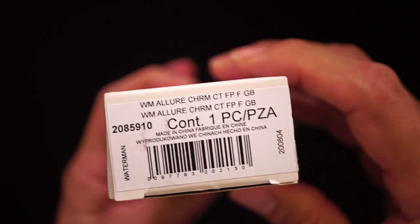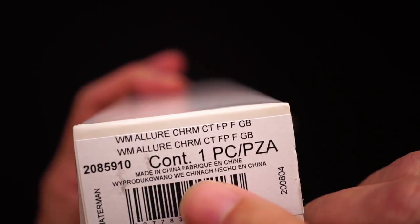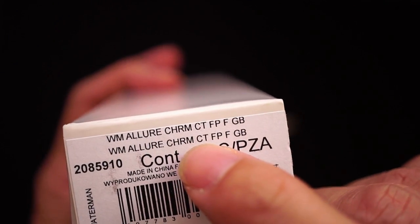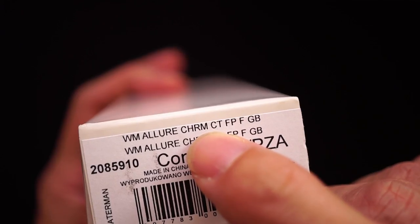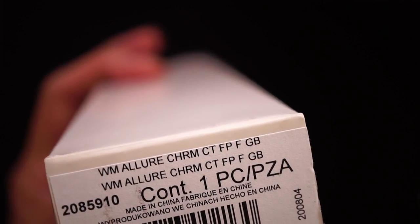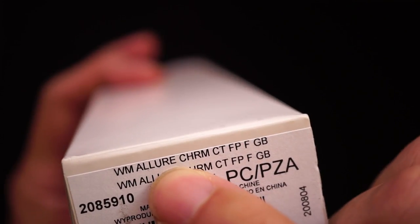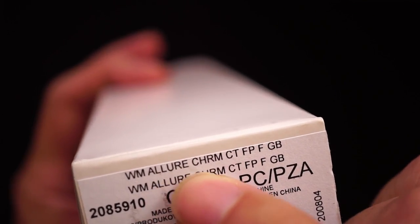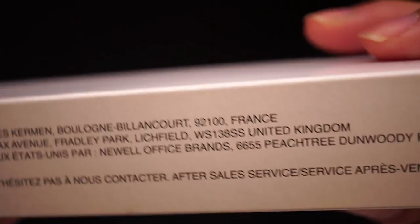And probably the interesting thing about the box is you can see the model number down here, this is actually the chrome finish. And even though it's called the Graduate where I bought it, it actually says on the box Allure. So maybe there's a double name for this pen.